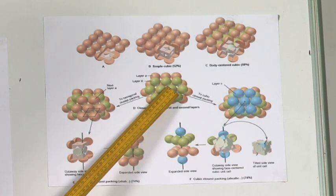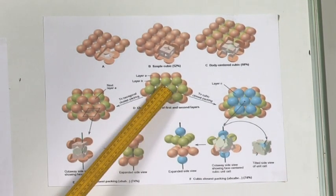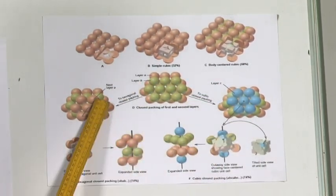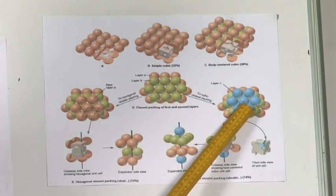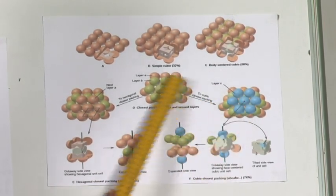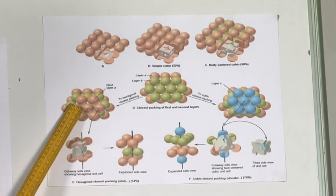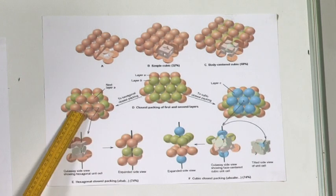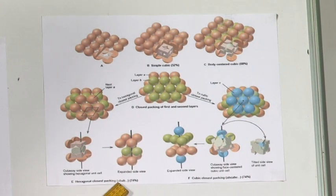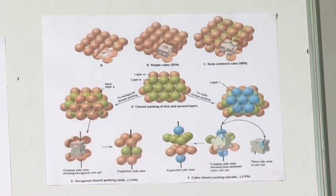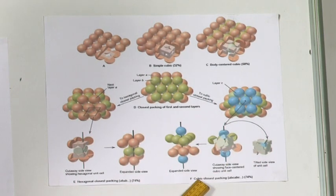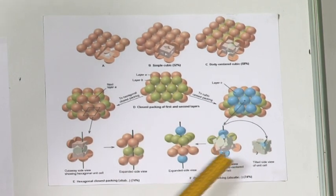There is one layer with orange spheres and a second layer with green spheres. When you develop the third layer, it can be done in two different ways. In one arrangement, the white voids are being covered; in the other, the white voids remain visible. This first arrangement is hexagonal close packing with ABAB layering, while the second gives CCP with an ABCABC arrangement.